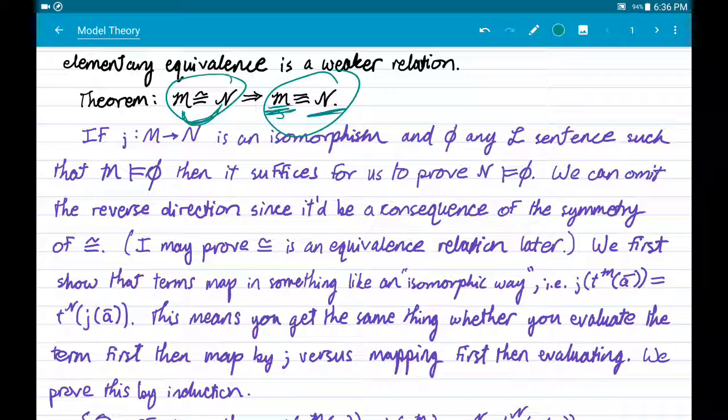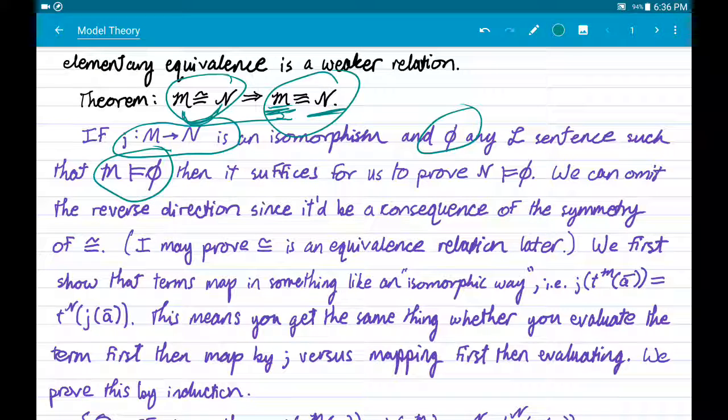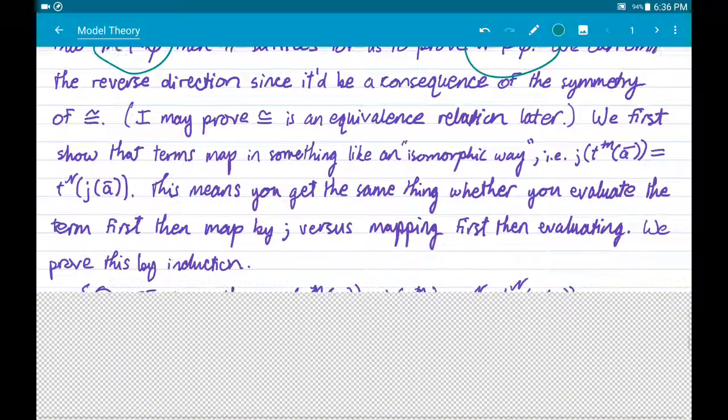So, I will only assume that we have some isomorphism j, and some sentence phi, which M satisfies. And I will show, my task is to show, that N also satisfies it. I won't prove the reverse because it comes for free.